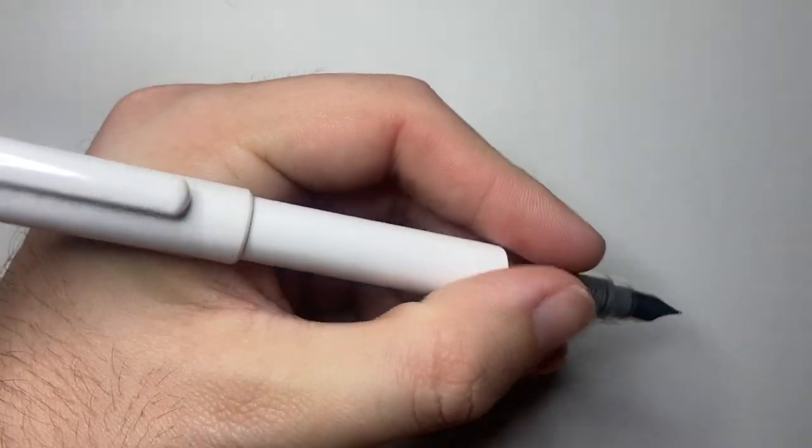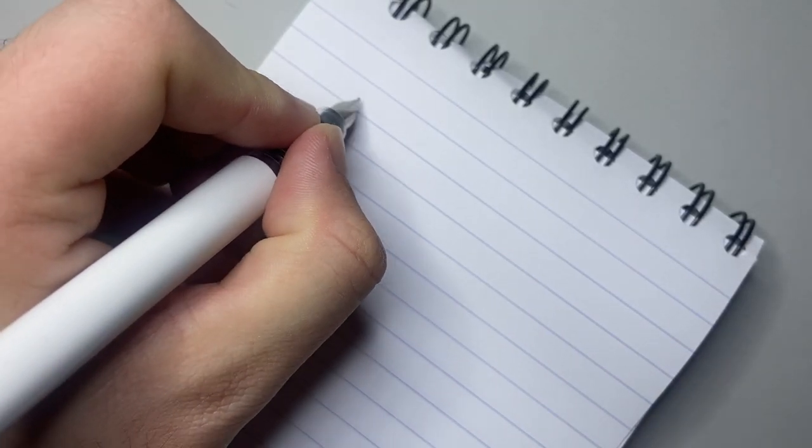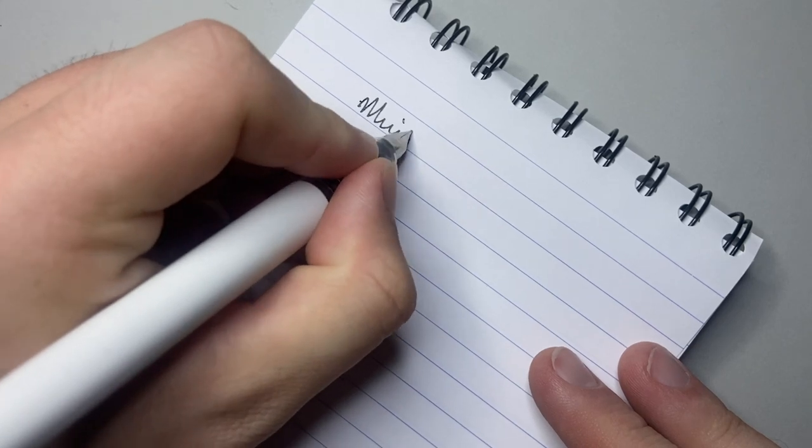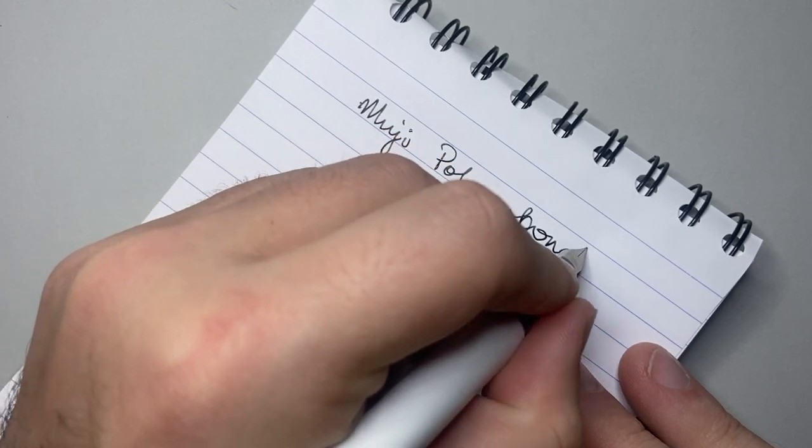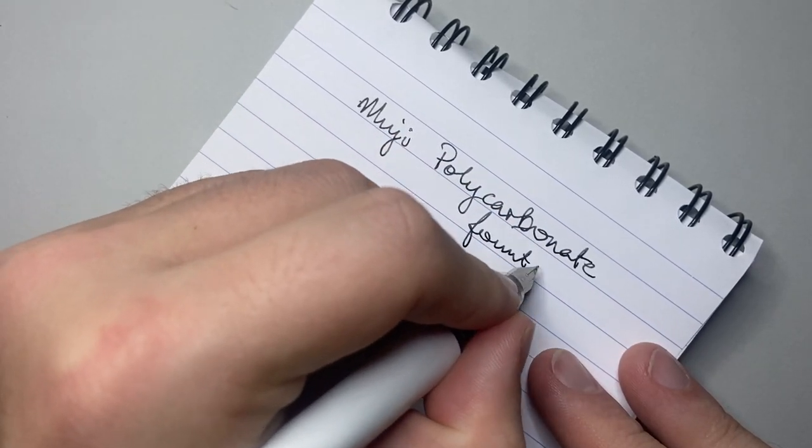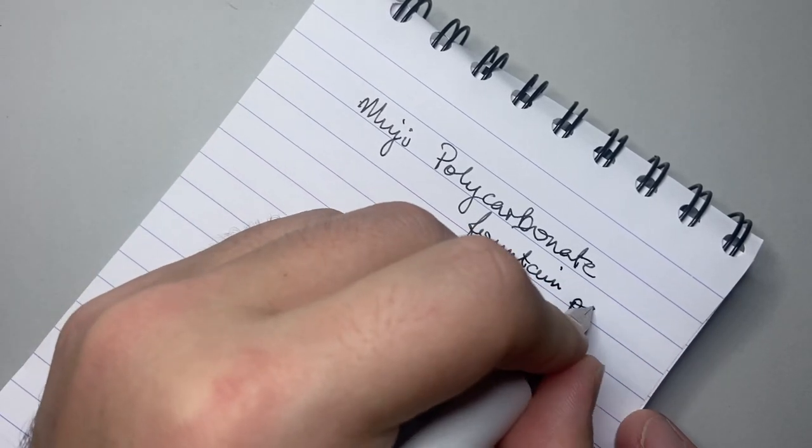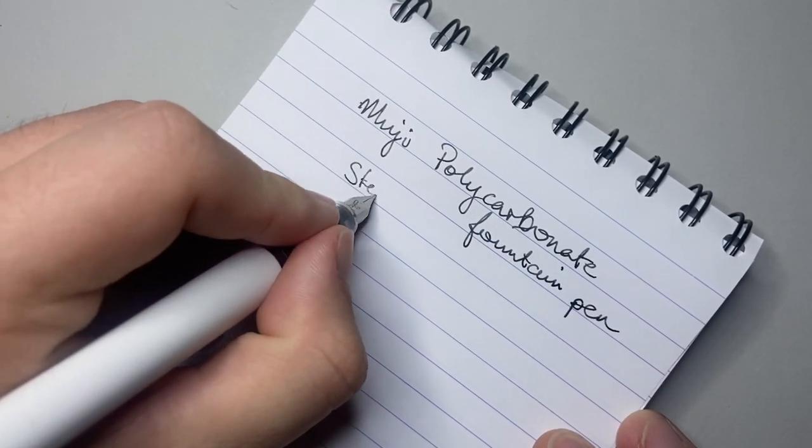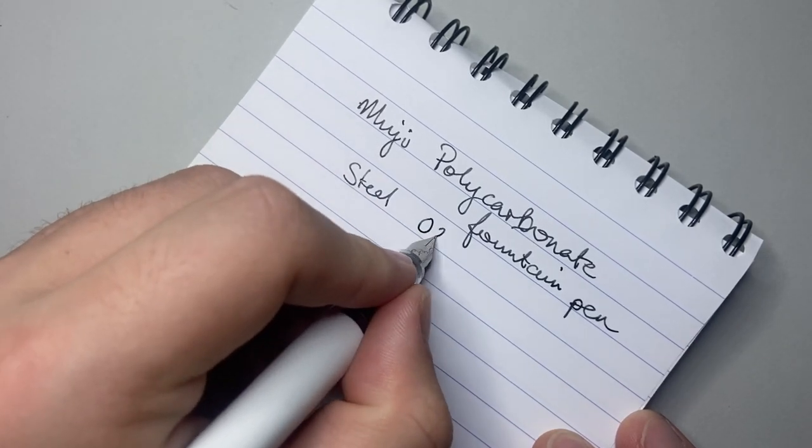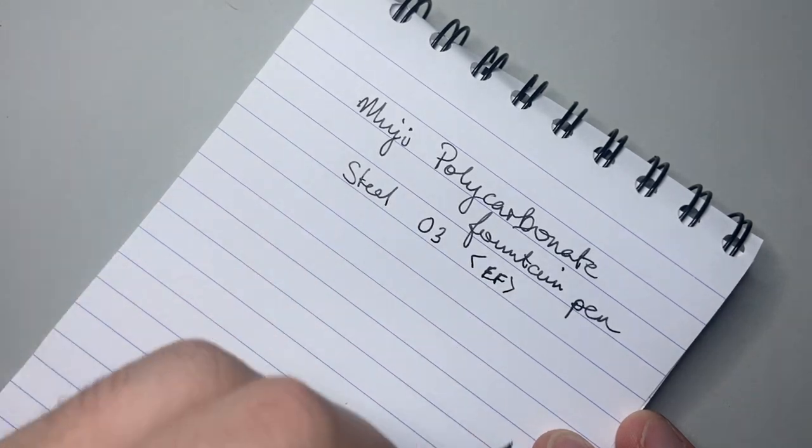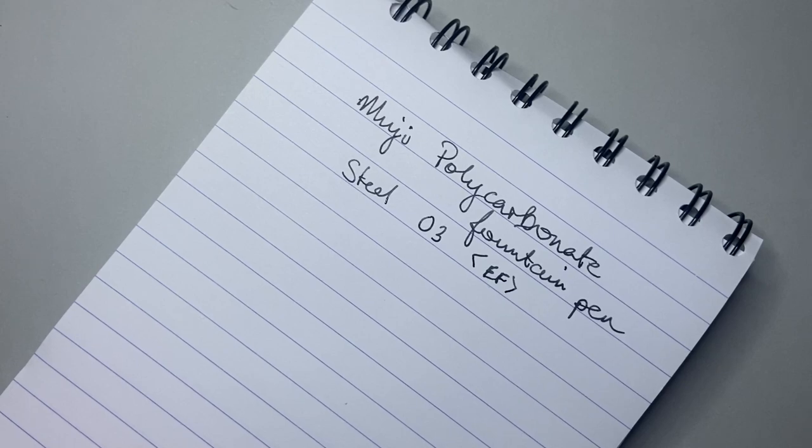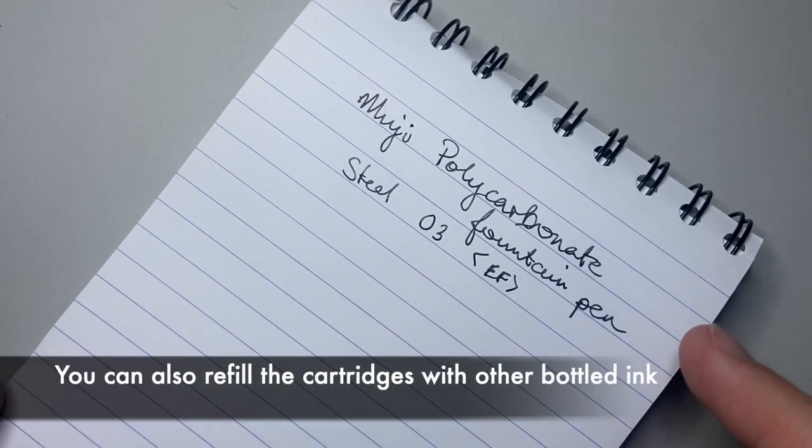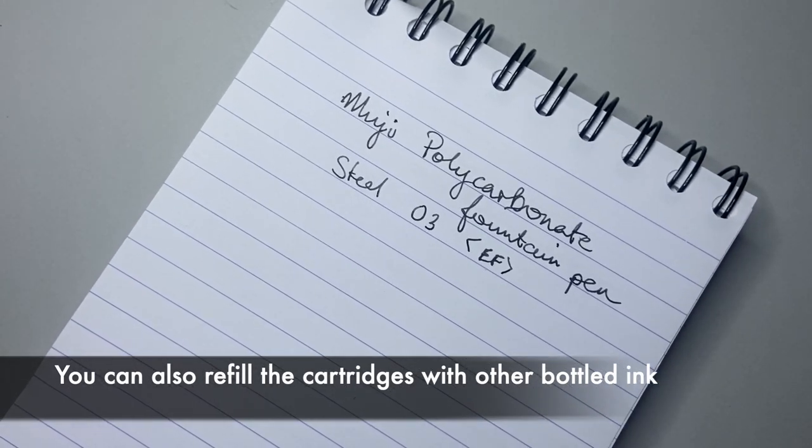We'll do a quick writing sample with it now. We have the Muji polycarbonate fountain pen. This is a steel 0.03, so I'm guessing that's about an extra fine nib, proprietary nib to Platinum. And as I said, the cartridge system in this is also proprietary, but if you get the cartridges from Platinum or a couple of the other brands that make similar ones, you're pretty safe.